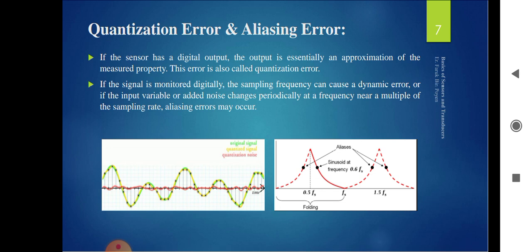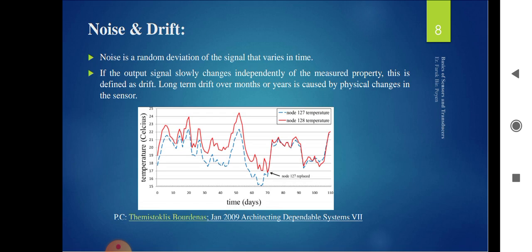Quantization error and aliasing error are related to noise. Sometimes due to environmental changes or biasing errors, noise is produced in the sensors — this is called quantization and aliasing error. Noise and drift: for example, CCTV cameras also use sensors, and sometimes due to improper biasing conditions and environmental changes, errors appear in pictures. You may have observed variable CCTV output — this occurs because of noise and drift produced by environmental or improper biasing conditions.